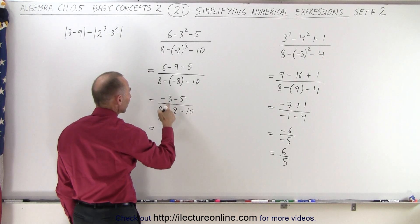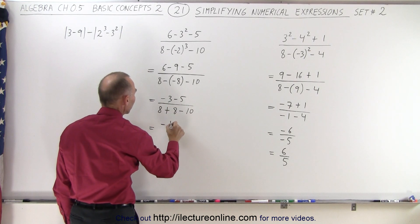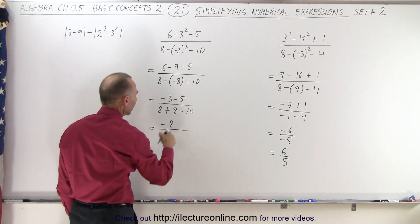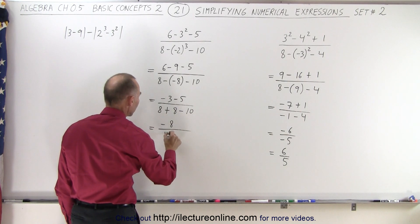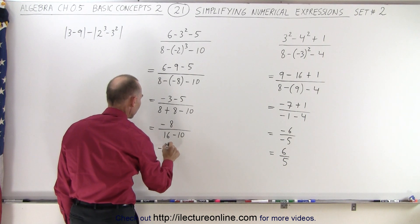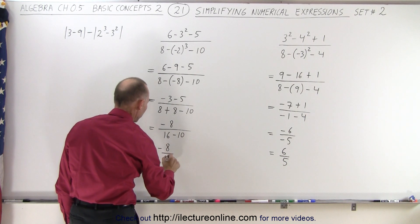So this becomes, in the numerator, minus 3 minus 5, which is minus 8. In the denominator, I must add these two before I subtract the 10. Again, 8 plus 8, 16 minus 10. And finally, this is equal to minus 8. 16 minus 10 is equal to positive 6.